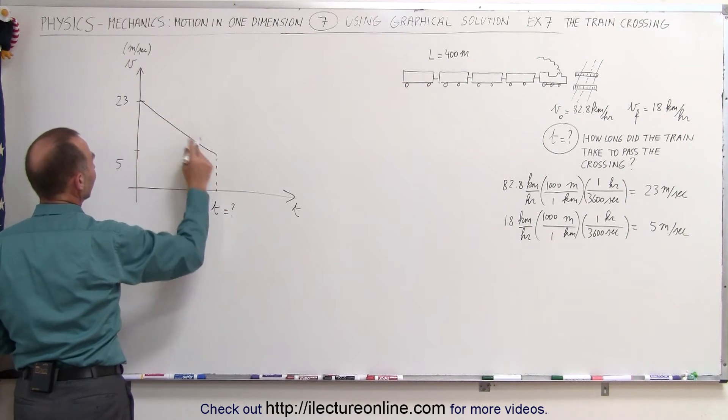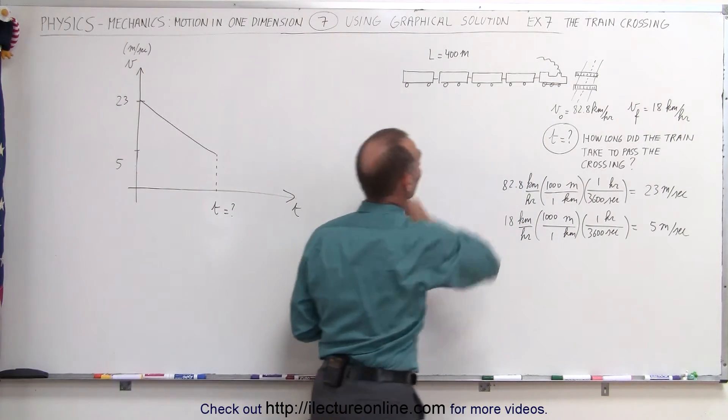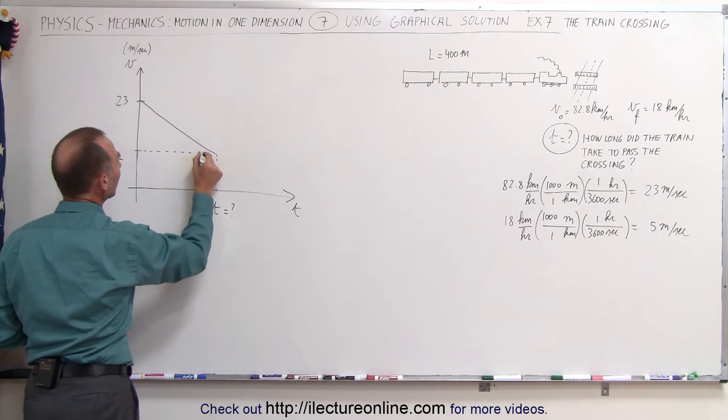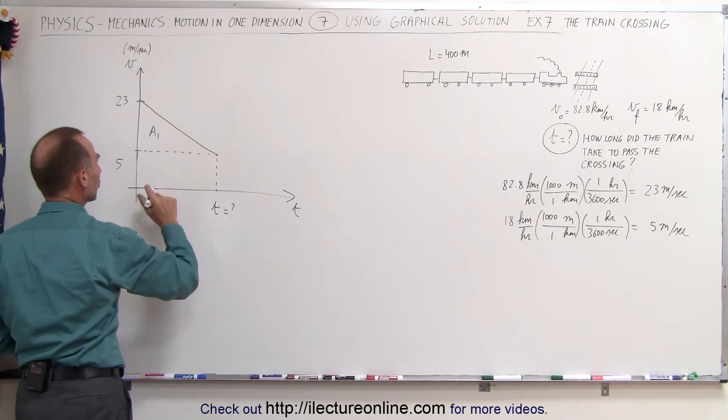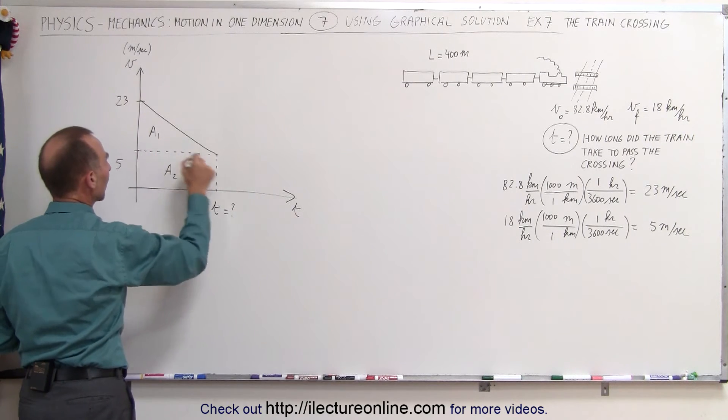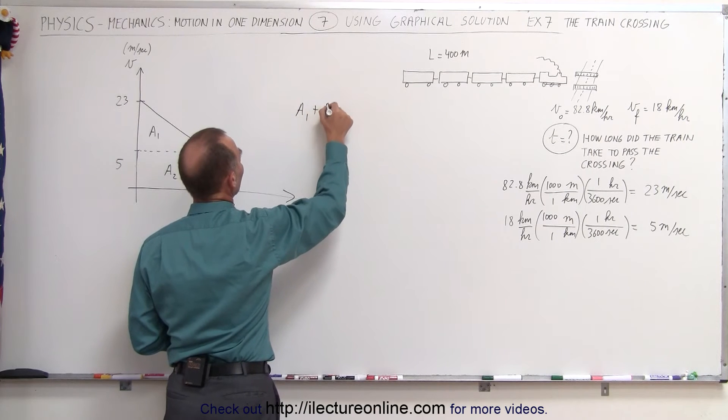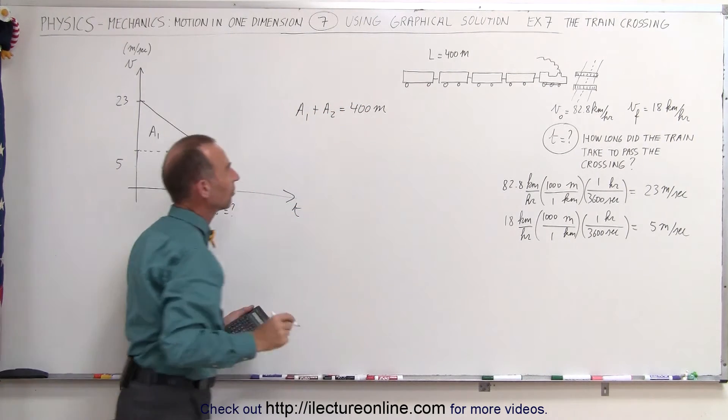But notice that the area underneath this curve will equal the total length of the train, 400 meters. And if we divide the area up into two areas, call this A1, which is the triangular portion underneath the curve, and A2 is the rectangular portion, we can therefore say that A1 plus A2 is equal to 400 meters, the length of the train.